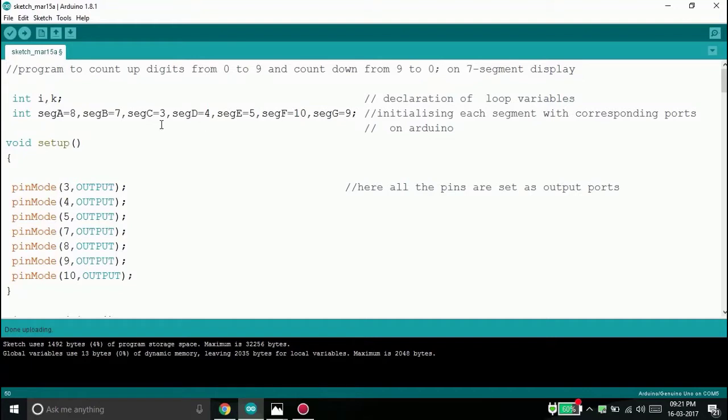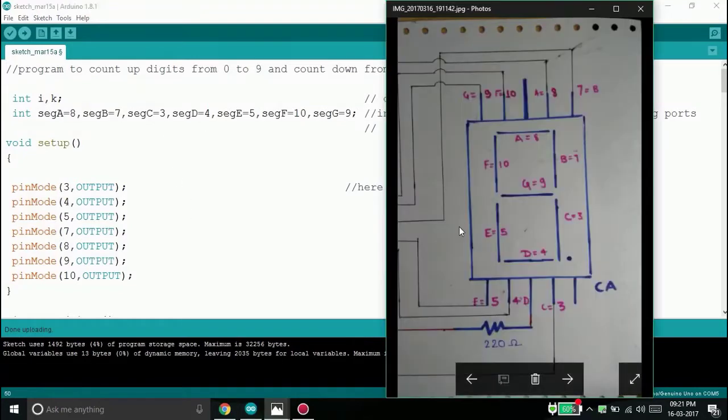For your reference, look at this figure. From this, we see that the segment A is connected to the 8th port, segment B is connected to the 7th port, segment C is connected to the 3rd port, segment D is connected to the 4th port and likewise all the ports are connected to their corresponding pins.